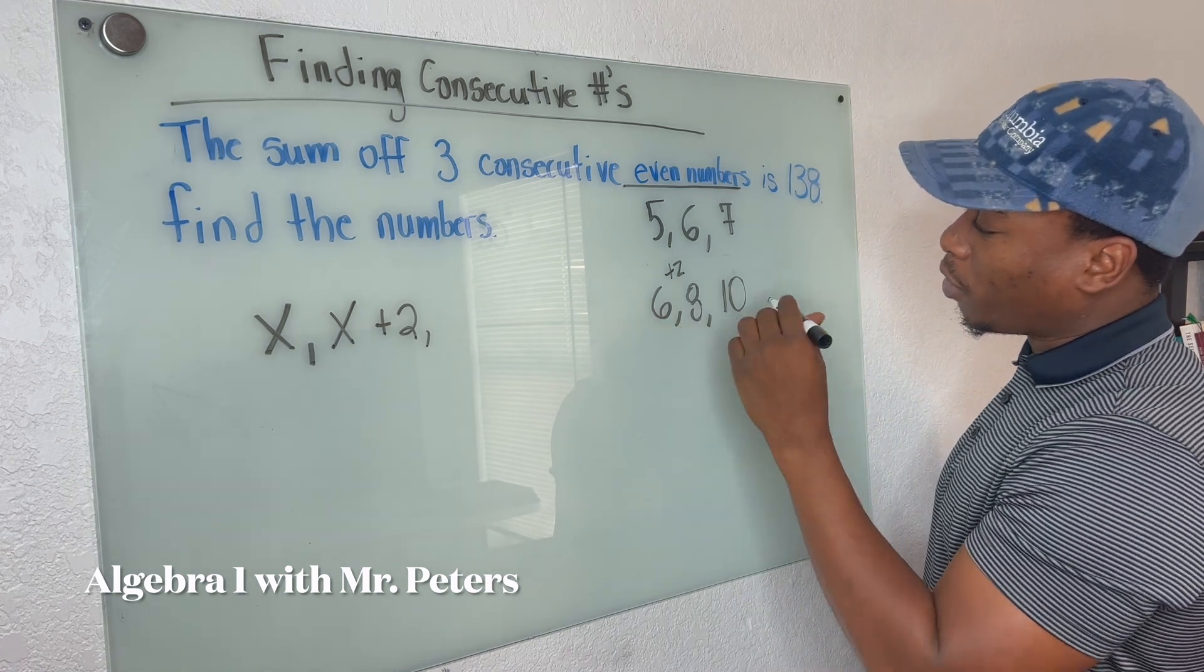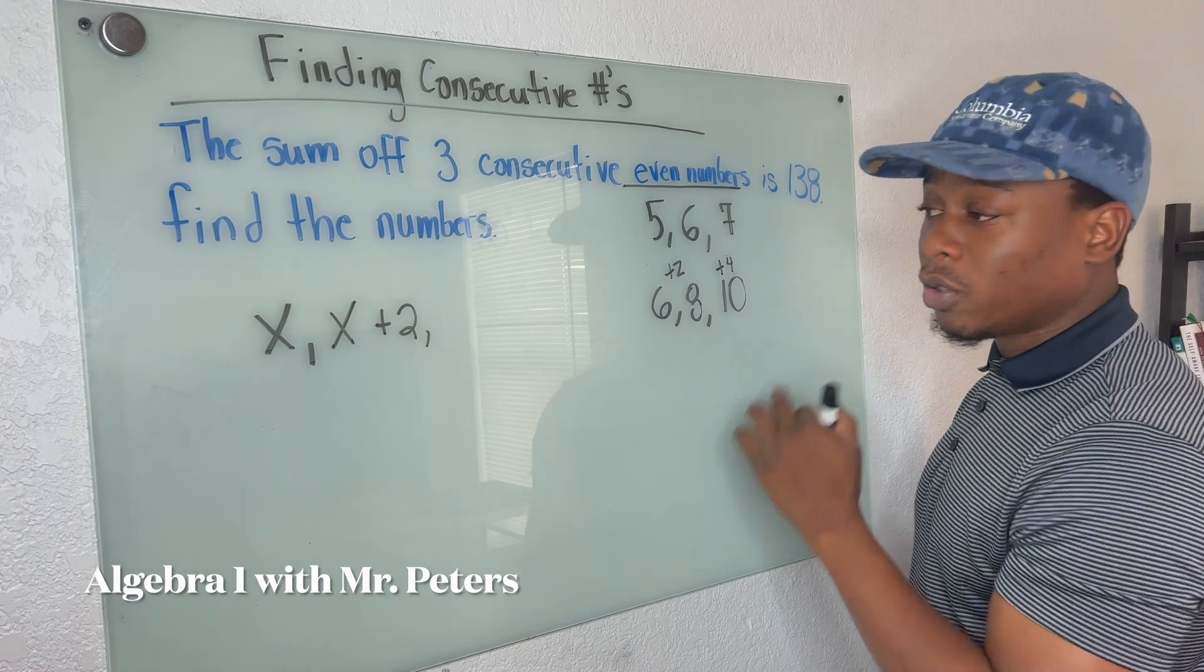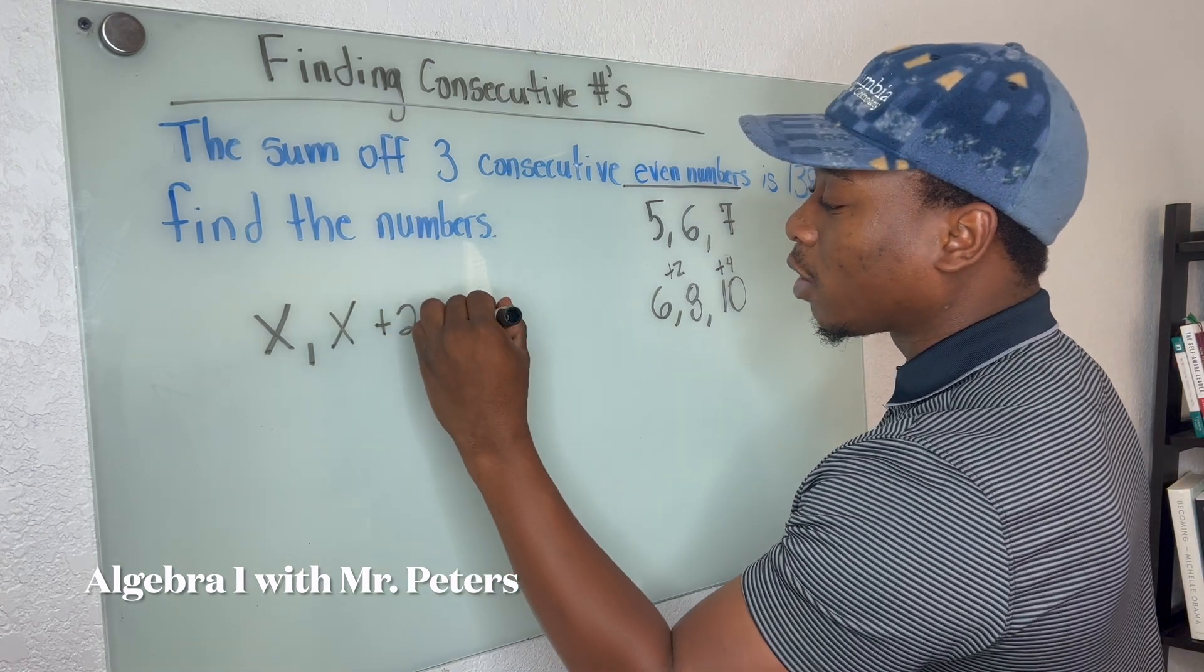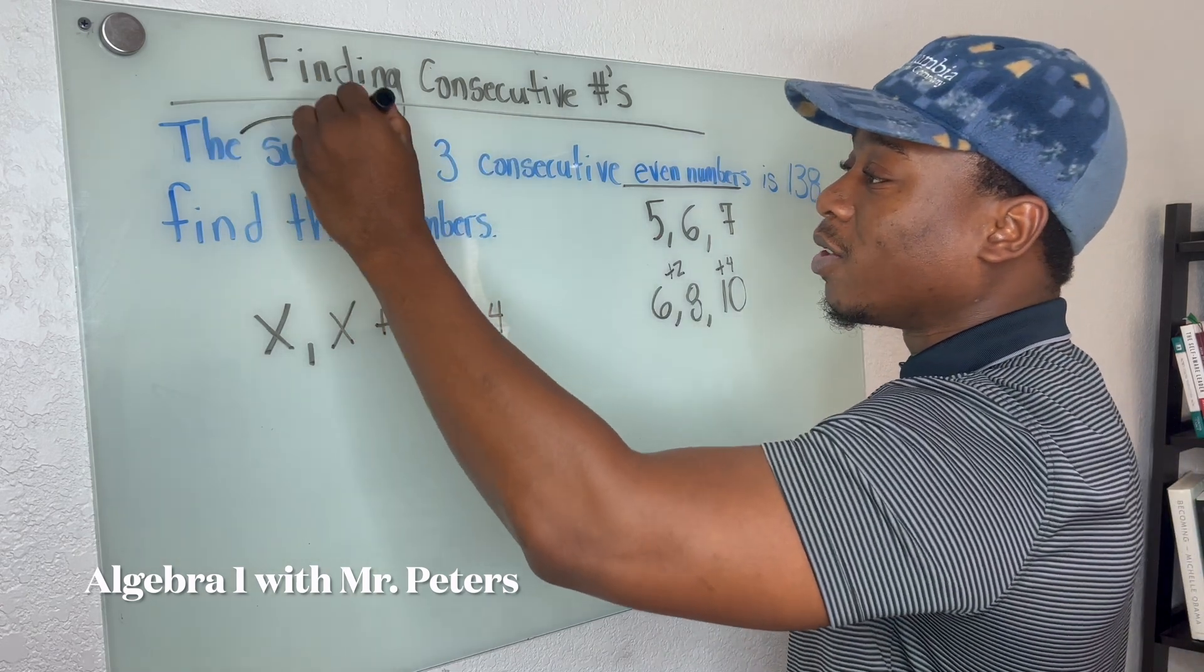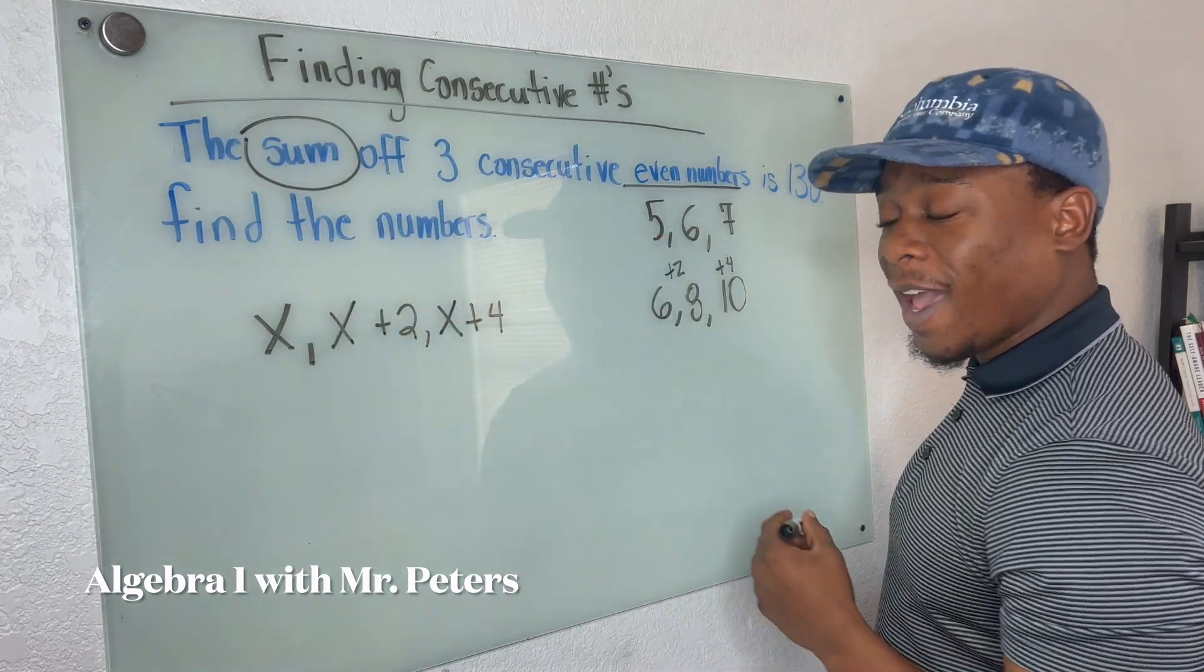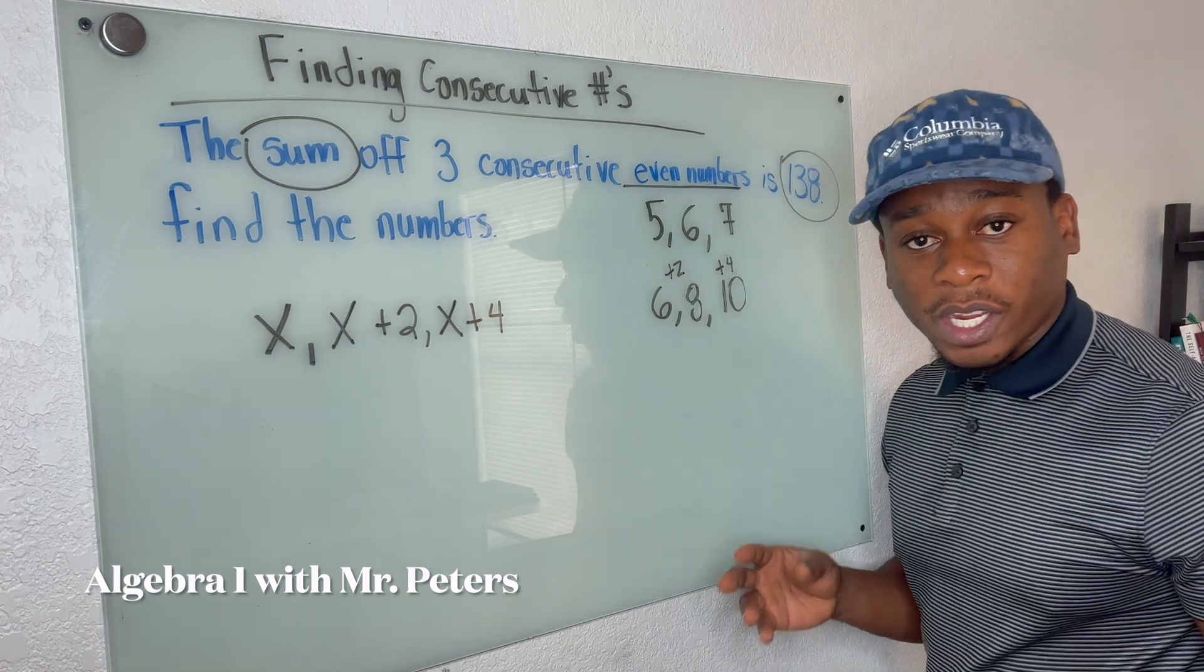And then the last even number would be plus four. So now we're going to do x plus four. And we know in this problem, we say the sum. So that means we're adding and this is going to be equal to 138.